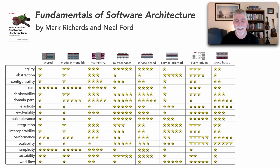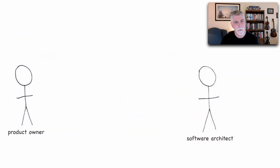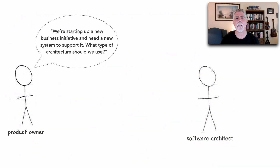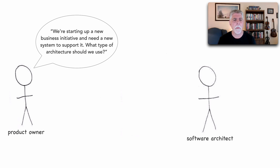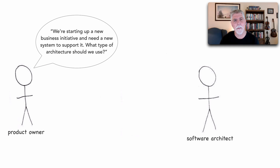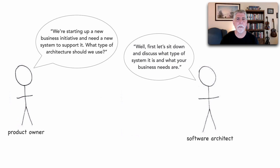So let's see how to avoid the cart before the horse anti-pattern. Going back to our conversation where the product owner asks: we're starting up a new business initiative and need a new system to support it — what type of architecture should we use? To avoid the anti-pattern, the software architect now says: well, first, let's sit down and discuss what type of system it is and what your business needs are.